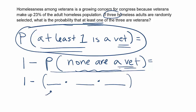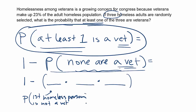Looking at the first fraction, that's our first homeless person. We want none of them to be vets, so the first homeless person is not a vet. We're looking for that probability. It tells us that 23% of the population of homeless adults are veterans, so the complement — the leftover amount — is 77%. Those are the ones that are not veterans. So the chance that a randomly selected homeless person is not a vet is 77%, or written as a decimal, 0.77.